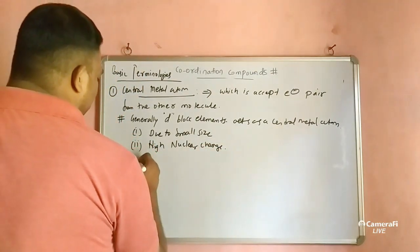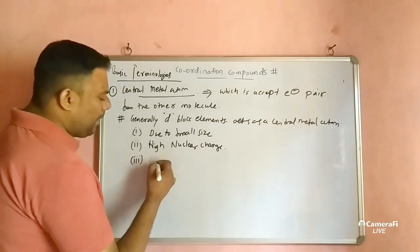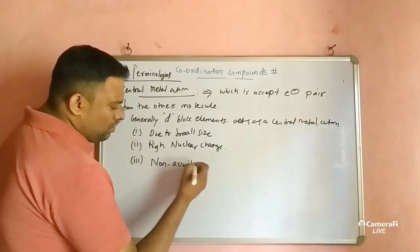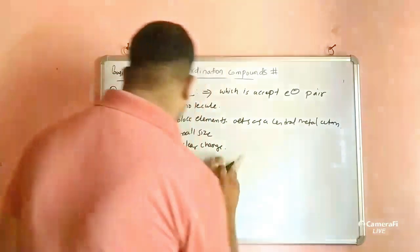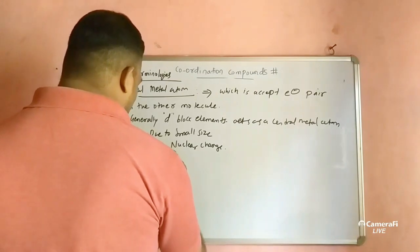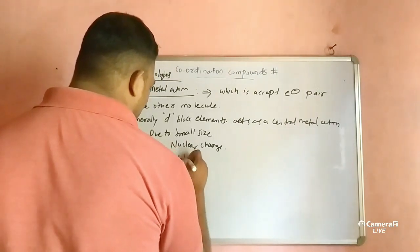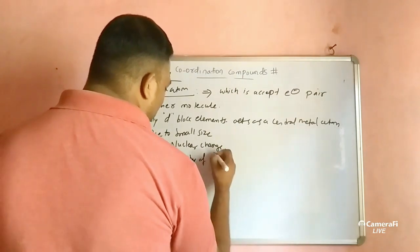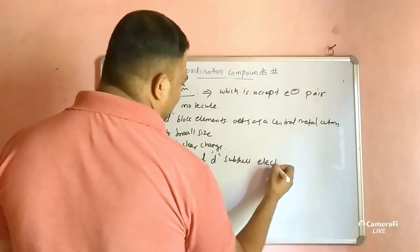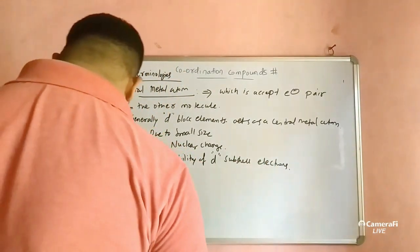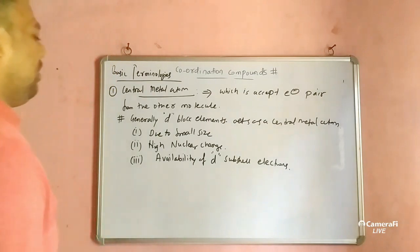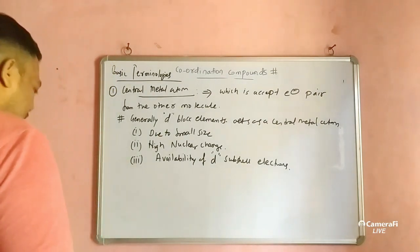The third reason is the availability of d-subshell electrons, or we can say the availability of vacant d-subshell orbitals. Now, the second basic terminology is ligands.